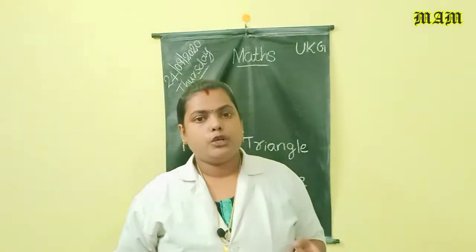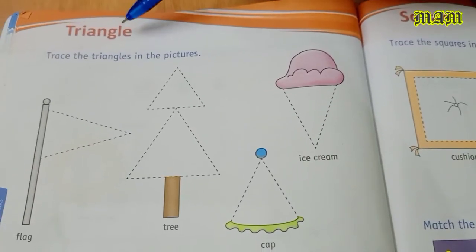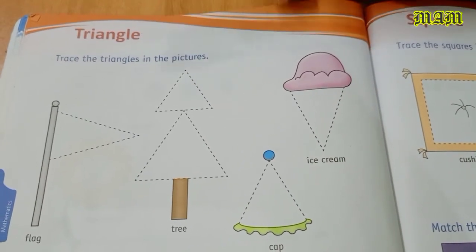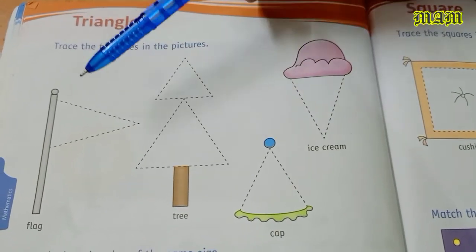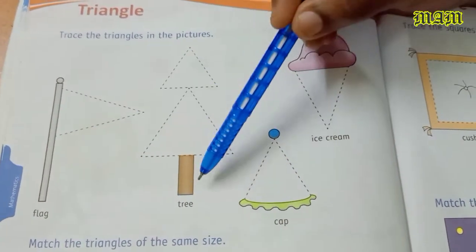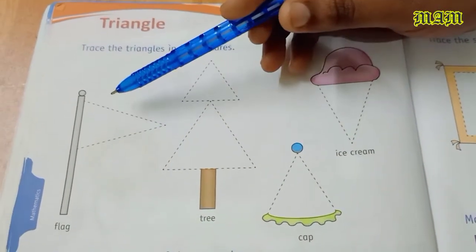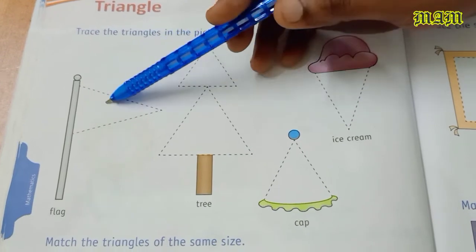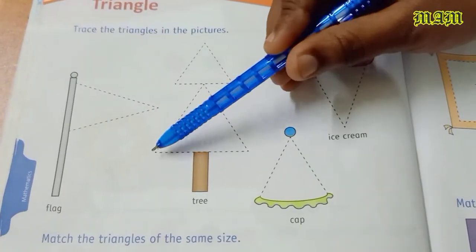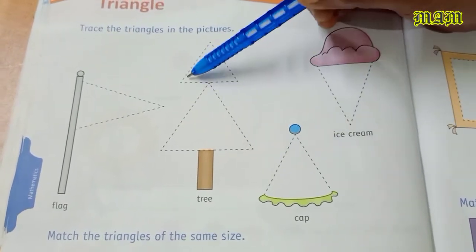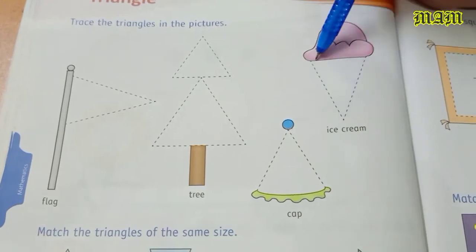Now take your textbook to page number 60. Look here. Triangle. Trace the triangles in the pictures. Flag, tree, cap and ice cream. This one, two, three, four.